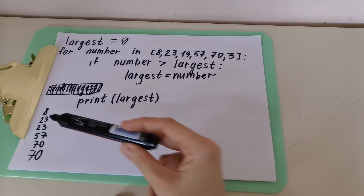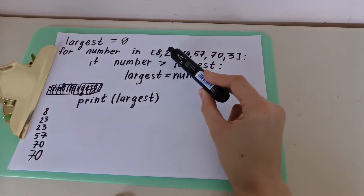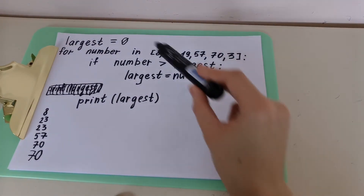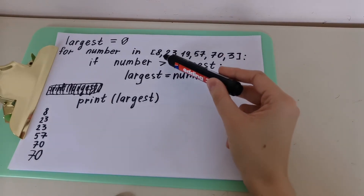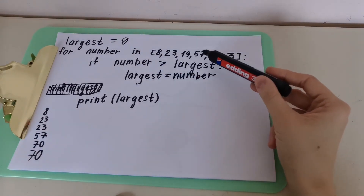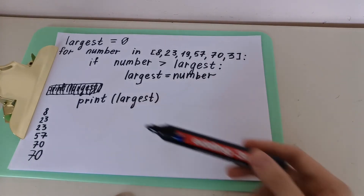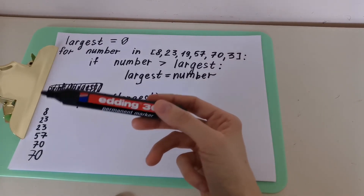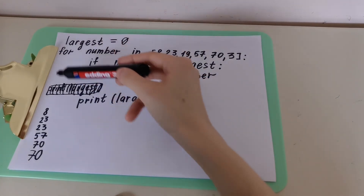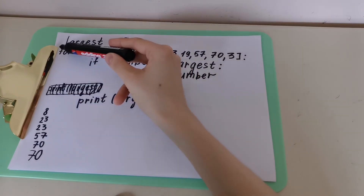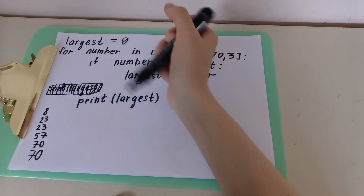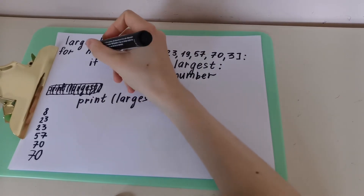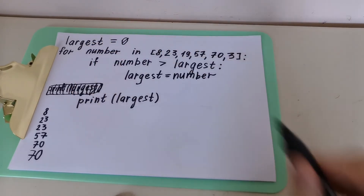So we can see the output sequence: 8, 23, 23, 57, 70, 70. That is how it works — it compares every single number with `largest`, and `largest` changes: from 0 to 8, 23, 57, 70. The final output is 70. If you want just the final result, put the print at the `for` level; for detailed process output, put it at the `if` level.